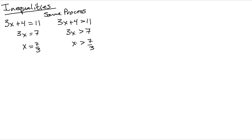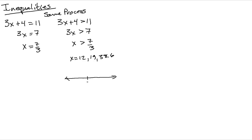The equation has exactly one answer, but the inequality has a billion answers — x could equal 12, 19, 38.6, any number bigger than 7/3. We run into a problem: we can't write them all down. That's why we graph them — because we can't list every solution.